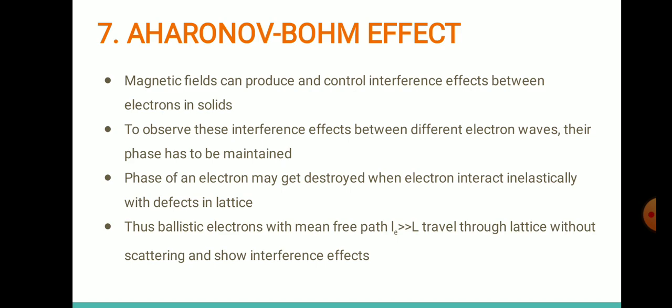To observe the interference effect you want to preserve the phase. But in most cases electrons may destroy their phase due to inelastic collisions. Thus only ballistic electrons whose mean free path is greater than the device dimension L can travel through the lattice without scattering and show interference effects. Our requirement is to generate ballistic electrons so we can observe the interference effect that magnetic fields produce.